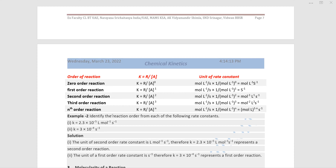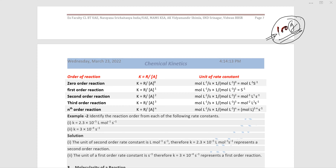Just as from a unit like grams you can tell a quantity is mass without being told, similarly from the unit of K you can predict whether the reaction is first, second, or another order — without needing further specification.